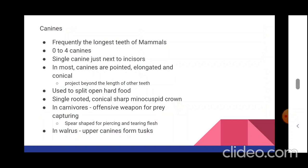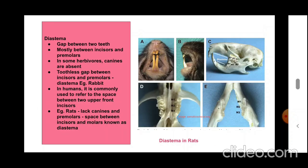Canines are frequently the longest teeth of mammals. There are zero to four canines — a single canine just next to the incisors in each quadrant of the dental arch. Most canines are pointed, elongated, and conical, projecting beyond the length of other teeth, and are used to split open hard food. They are single-rooted with a sharp monocuspid crown. In carnivores, canines are offensive weapons for prey capturing — spear-shaped for piercing and tearing flesh. In the walrus, upper canines form tusks.